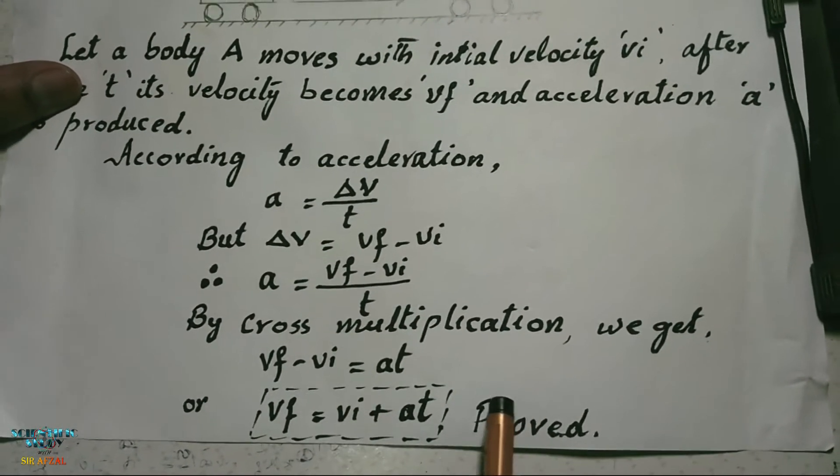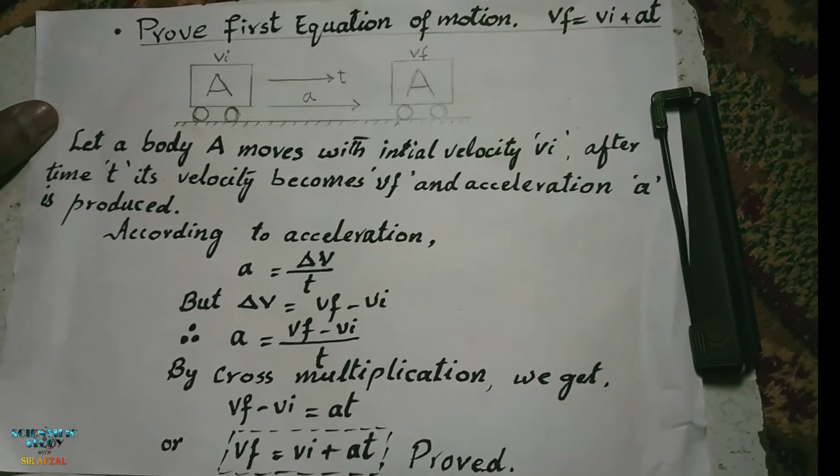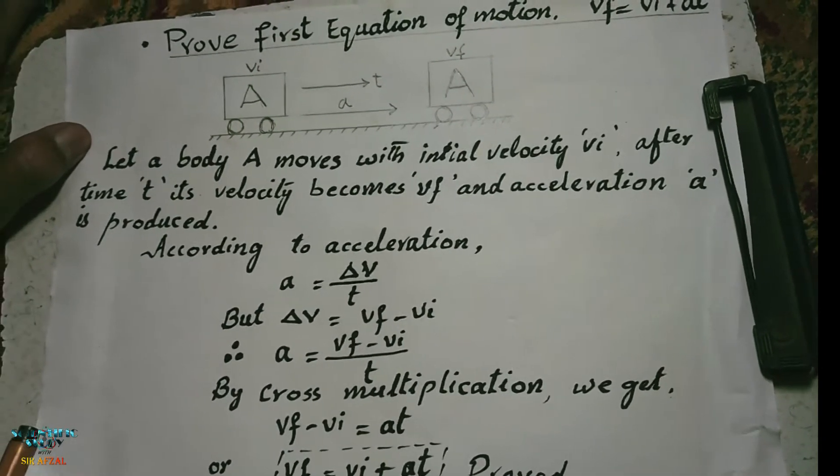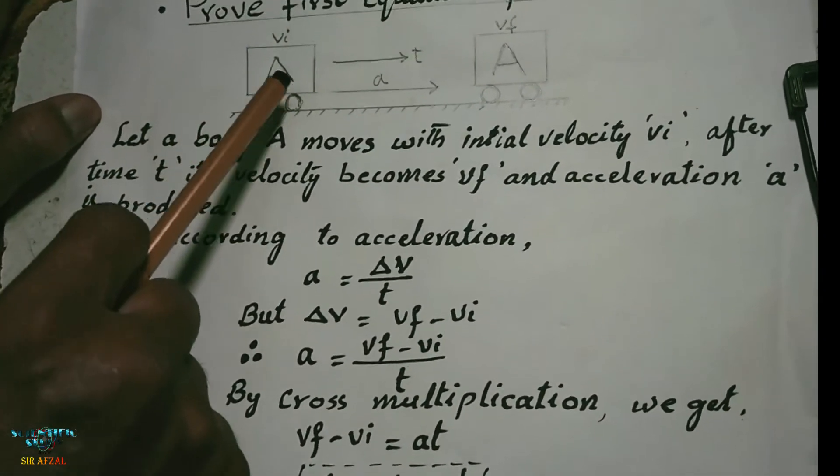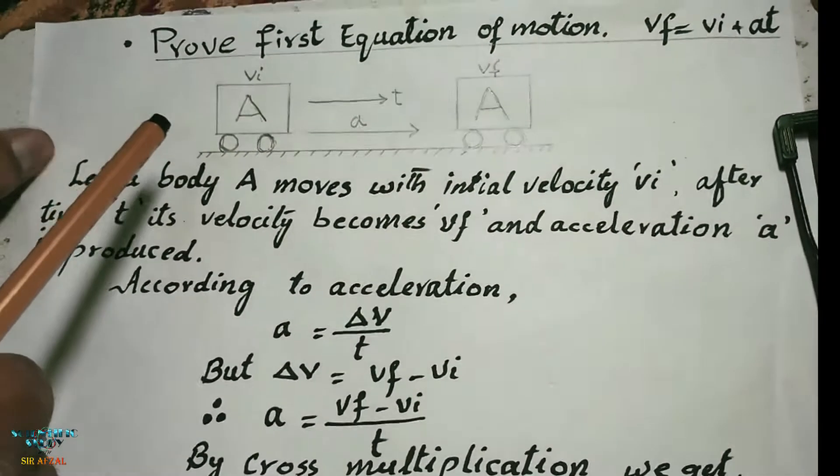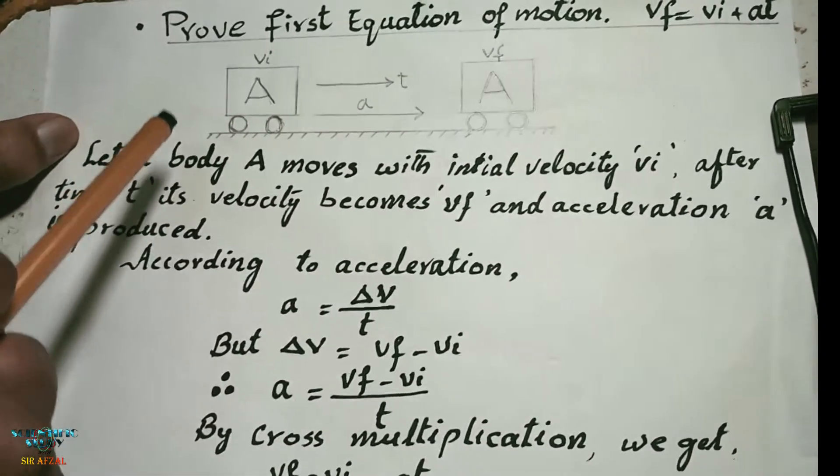So this is the first equation which is proved. For the examination it has two marks or three marks, but 0.5 or one mark is for the diagram, so you have to draw the diagram whenever there is a derivation.